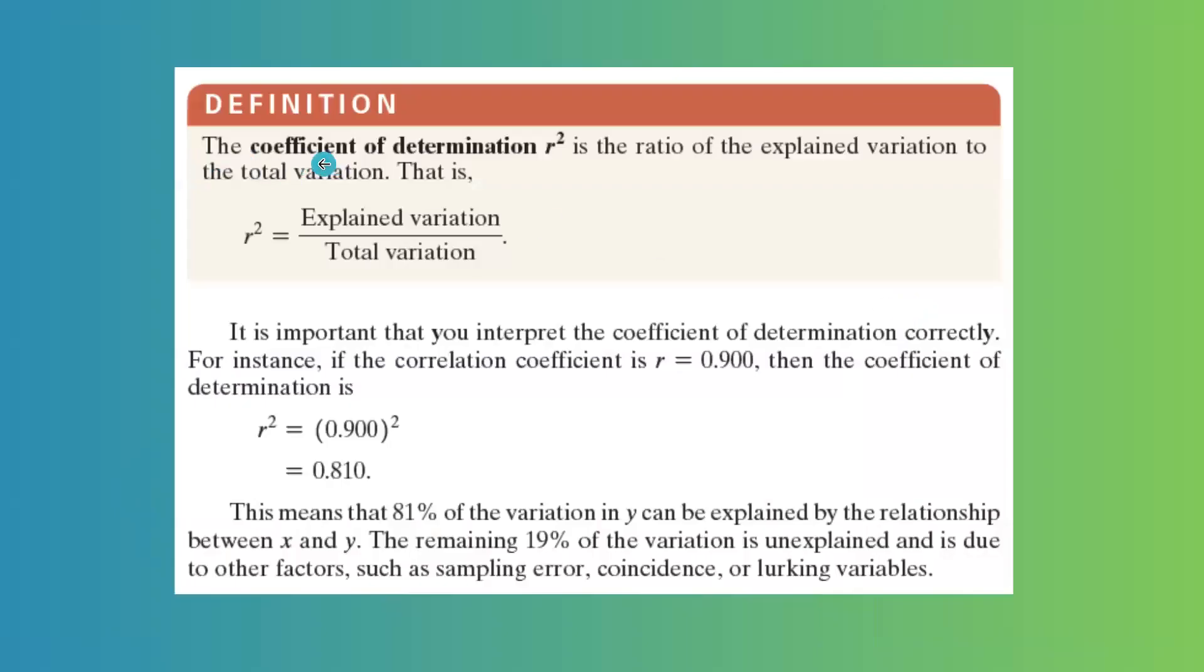Now for the coefficient of determination r squared. It is the ratio of explained variation to the total variation. R squared is the ratio, the fraction, and the numerator you have explained variation and the denominator you have total variation.